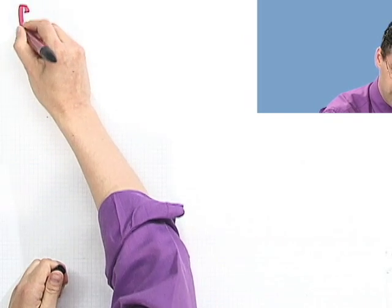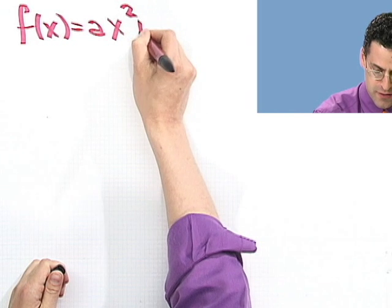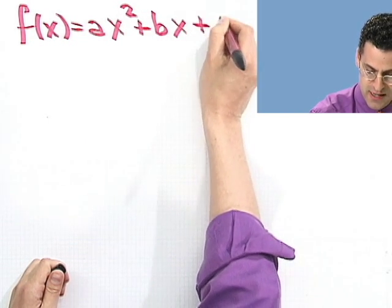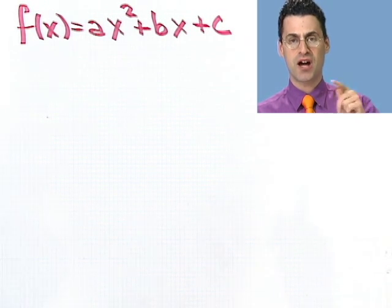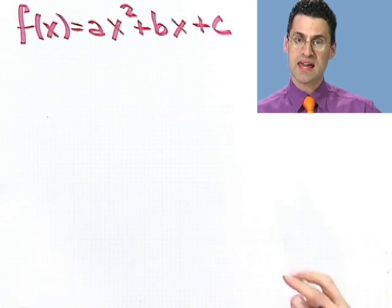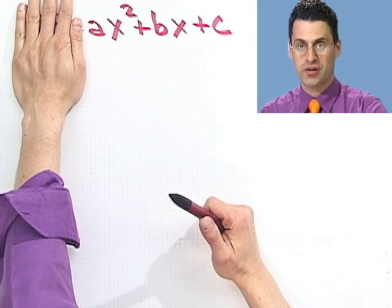let's say f of x equals ax squared plus bx plus c, then the discriminant, well that's the thing that would be under the square root if you use the quadratic equation to solve that equals 0. And remember the quadratic equation.